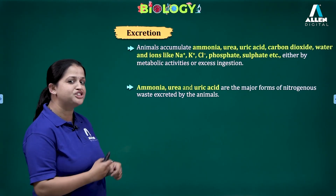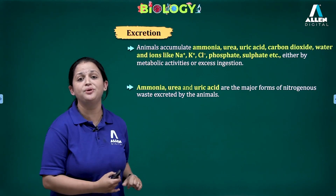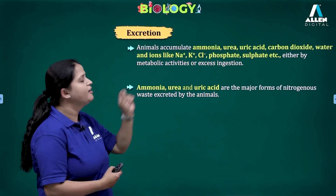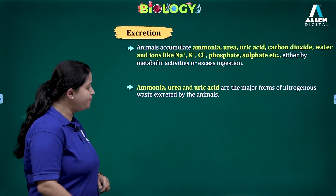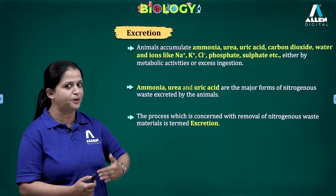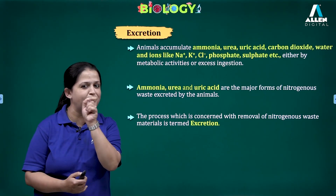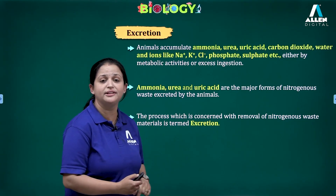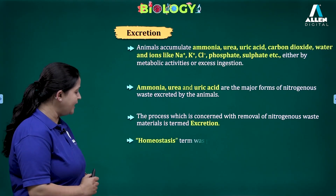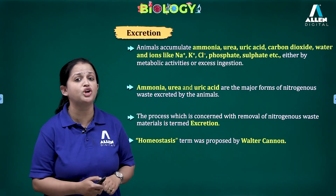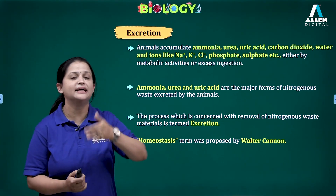The various nitrogenous waste materials mainly produced are ammonia, urea, and uric acid. These three waste materials are considered as the major nitrogenous wastes excreted by animals. So the process of removal of these waste materials from the body is known as excretion. In the excretory products and elimination chapter, we need to discuss more about excretion — it is a process concerned with removal of nitrogenous waste materials from the body.